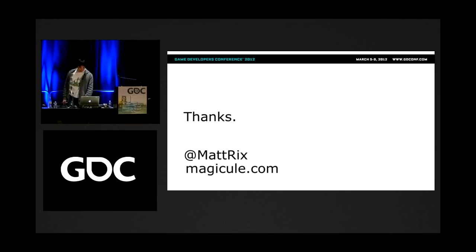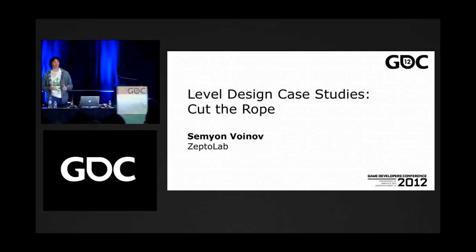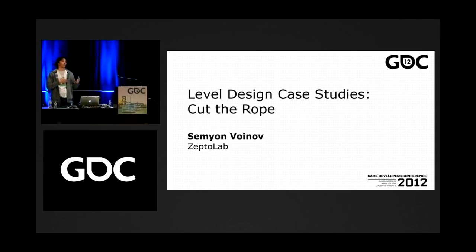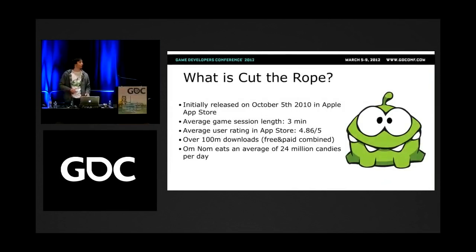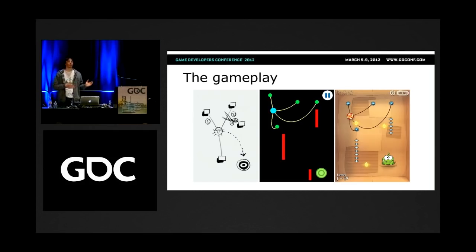Hello everyone. My name is Semyon, I'm creative director and co-founder of ZeptoLab, and I'll continue Matt's talk on level design from the perspective of Cut the Rope. I'll also share some sources of information we rely on when analyzing what we did right and what could be better. In case you haven't heard about Cut the Rope, it's a pretty popular game initially released for mobile platforms about one and a half years ago. It's built around the simple principle of delivering an object from point A to point B by cutting ropes in a specific order and with the right timing. You can see how the game evolved from the very early draft to the final look, with point B ending up as this green creature called Omnom.